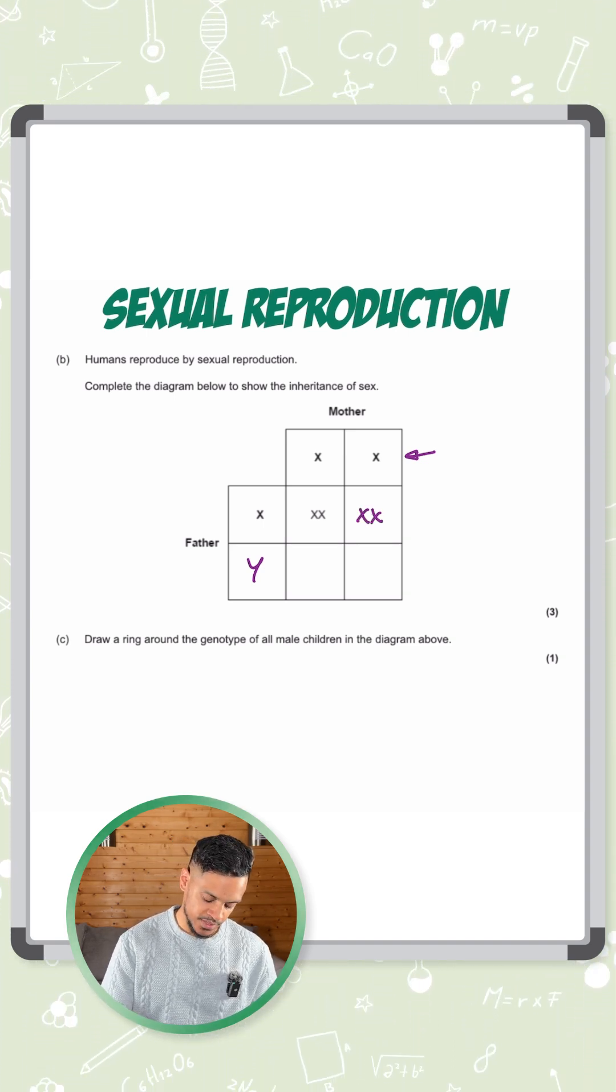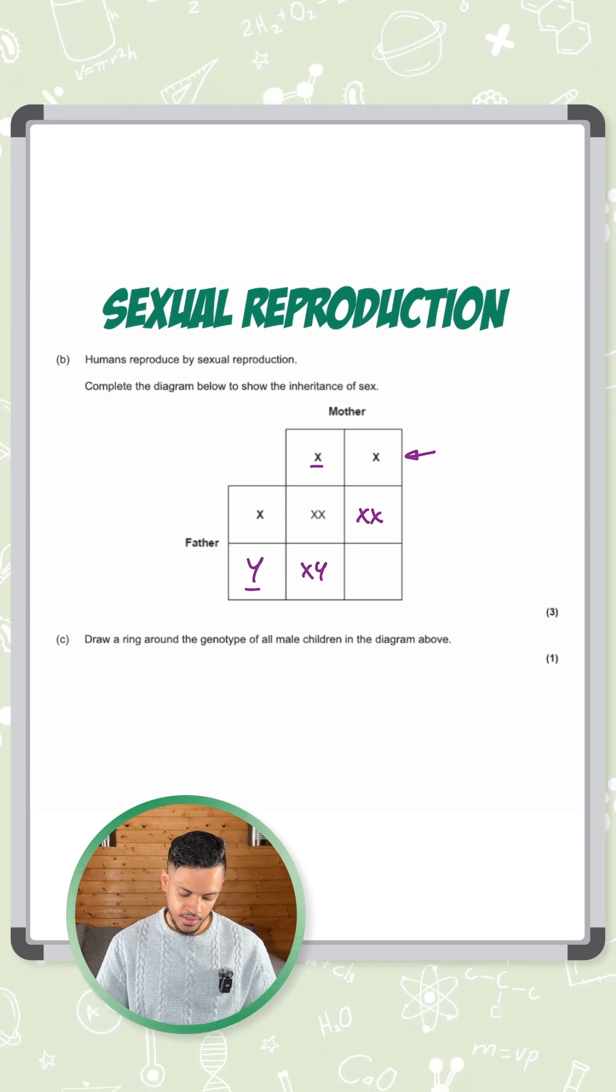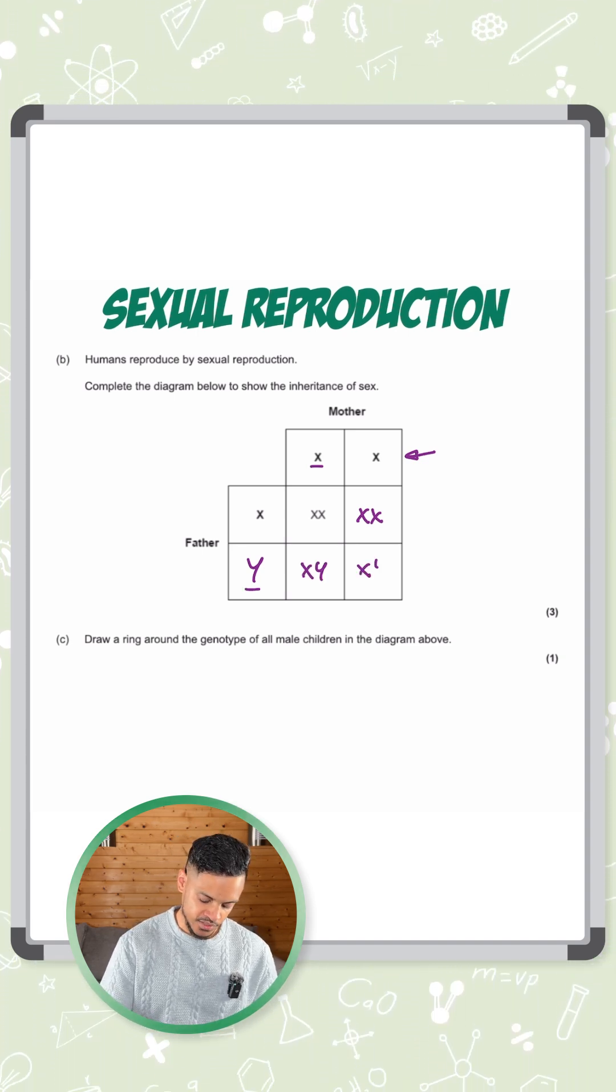Then on the bottom left, this is the X and the Y joining together. So we have an XY here and we also have an XY here.